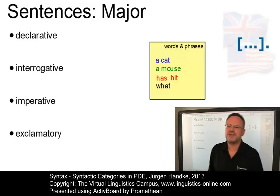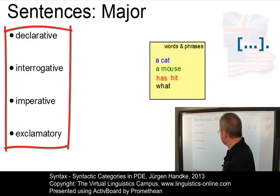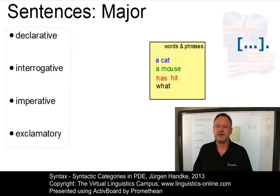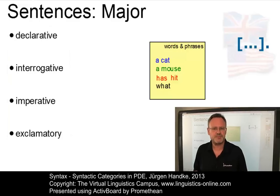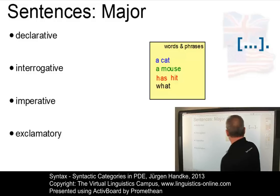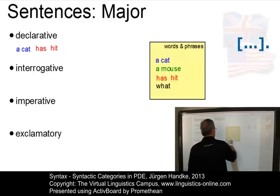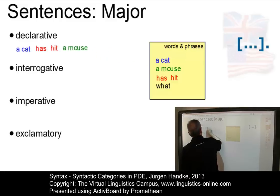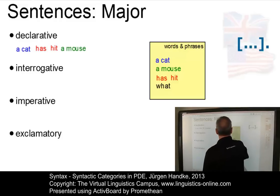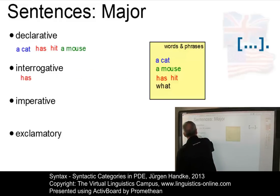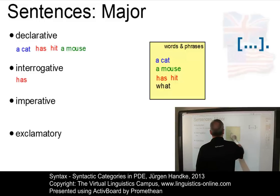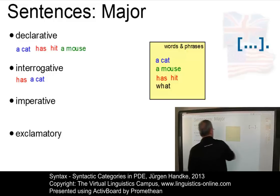There are four types of major sentences in English: declarative, interrogative, imperative and exclamatory. A declarative sentence would be something like: A cat has hit a mouse — clearly a subject-verb-object structure. In an interrogative sentence, the operator — the auxiliary verb — has to precede, and we have: Has a cat hit a mouse?